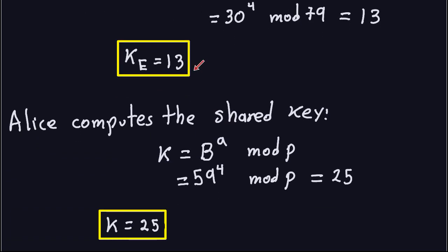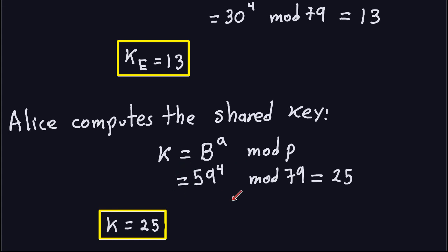From there, Alice computes the shared key, which must be kept secret. The shared key is B^A mod P, where B is 59 (the public key component Bob published), A is the number she chose, and P is 79. Doing that modular exponentiation gives 25. So we have the ephemeral key and the shared key.